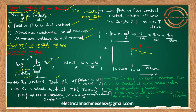For a shunt motor, apply DC voltage V. The line current IL divides as Ish and Ia. I add a variable resistance Rx in the field circuit. Using the relation N proportional to (V − Ia·Ra)/φ: when Rx is added, Ish reduces, flux reduces, and from this relation speed increases. So in field or flux control method for a shunt motor, we get above-rated speeds.